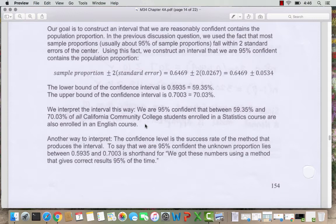So how do we interpret this? So here is one way that we can interpret our interval. We can say we are 95% confident that between 59.35% and 70.03% of all California Community College students enrolled in a statistics course are also enrolled in an English course. So what are salient features of our interpretation? First, our 95% is how confident we are in our methods or how confident we are in our answer.